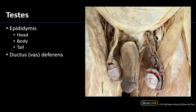The body of the epididymis is going to be more intermediate, and the tail of the epididymis is going to be more inferiorly placed. This tail is going to be continuous with the ductus deferens or vas deferens, which you can see extending up to be part of the spermatic cord and eventually making its way through the inguinal canal to join with the seminal gland to form the ejaculatory duct.